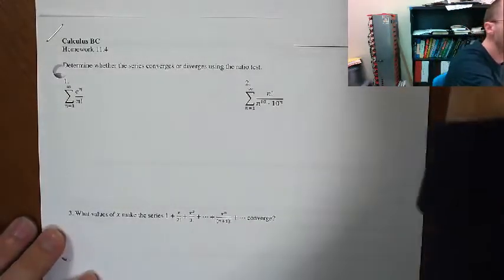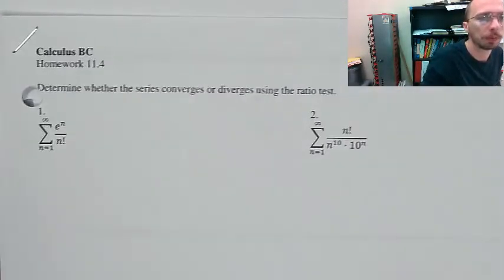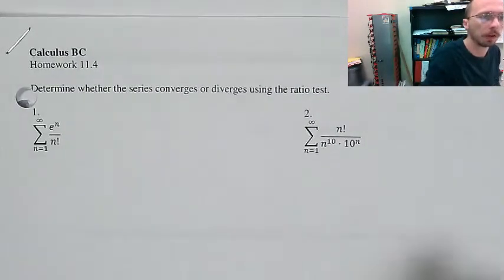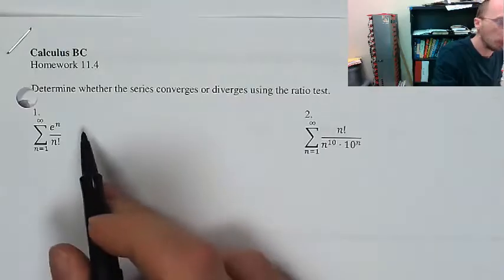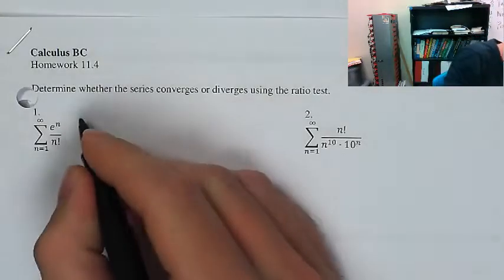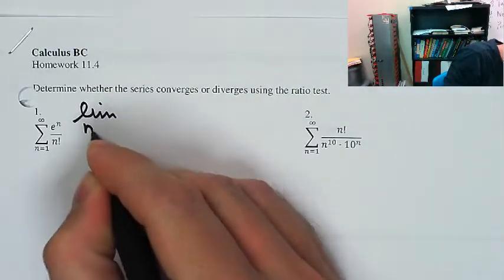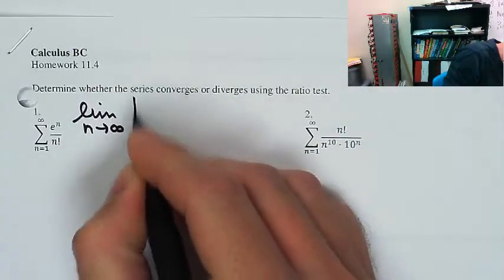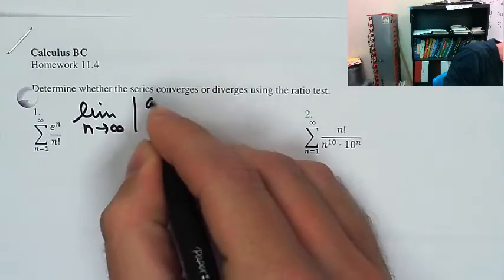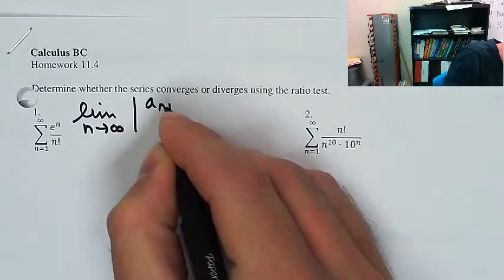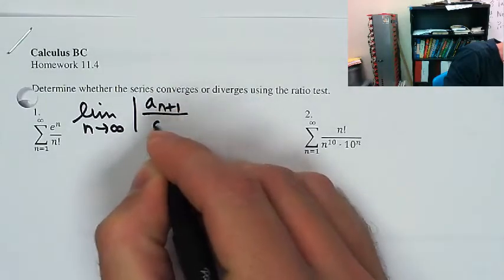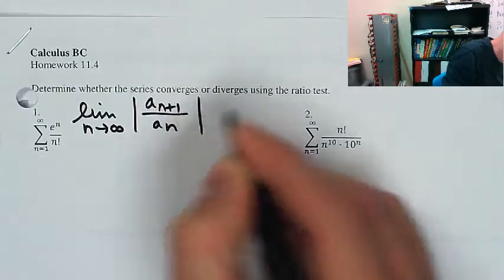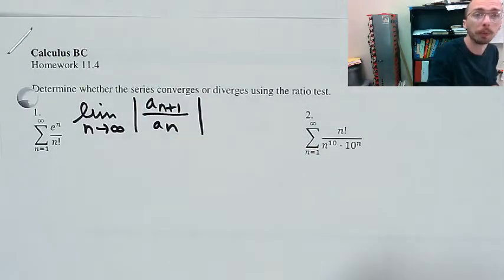We're going to determine whether the series converges or diverges using the ratio test. We're going to set up for the ratio test by saying I'm interested in the limit as n approaches infinity of the absolute value of the ratio of a_(n+1) to a_n. I'm going to start every time with that when I do the ratio test.